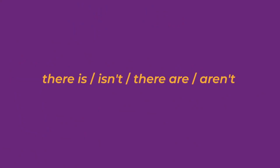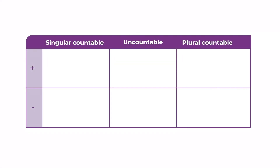Which language does the vlogger use? We use 'there is' with countable singular and uncountable nouns. For example: There's a quiz on this website. There's some dark chocolate.